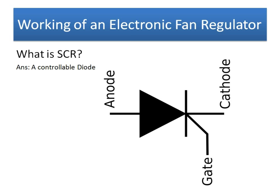Now let's look at the SCR, whose full form is Silicon Controlled Rectifier, also called a controllable diode. It is similar to a diode with two terminals — anode (positive) and cathode (negative) — but apart from these two terminals there is one more terminal called the gate.